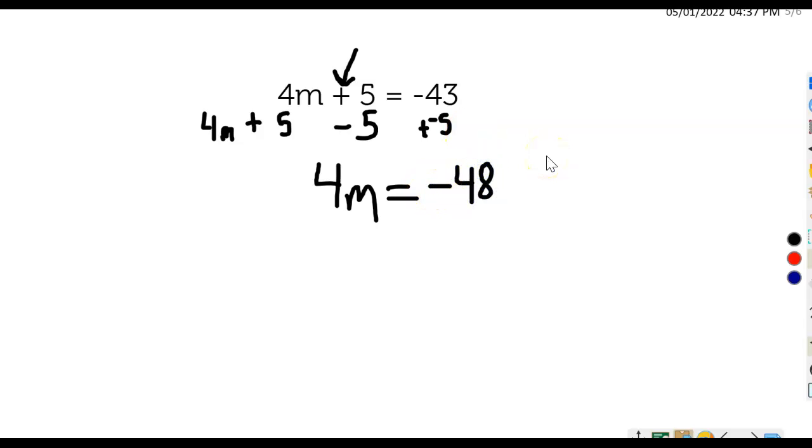Now we're down to a one step problem. One more step and we'll have it solved, and this is where we want to isolate the variable. So I need to do something on the left side so that my answer is going to be the variable. I'm going to divide by 4, which is the inverse of multiplying by 4. So I just do the inverse on both sides of the equation. My answer on the left side is m. My answer on the right side is negative 12.